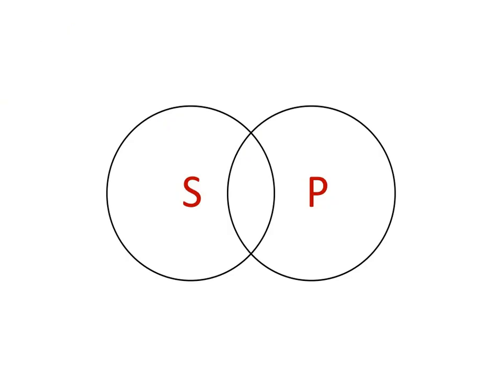So let's start with this. Here's our category of S and P, and we have this overlapping segment as well. A good way to think about this is to divide this Venn diagram into three parts.